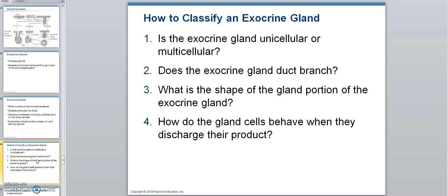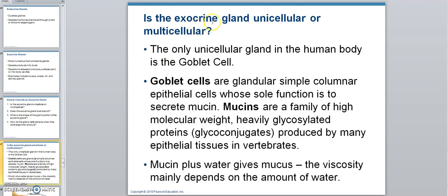How to classify an exocrine gland. Number one: is the exocrine gland unicellular or multicellular — meaning is it one cell secreting, or is it several cells secreting from the gland?